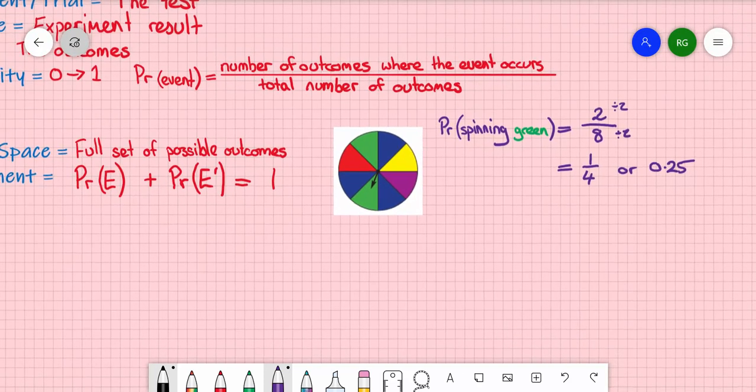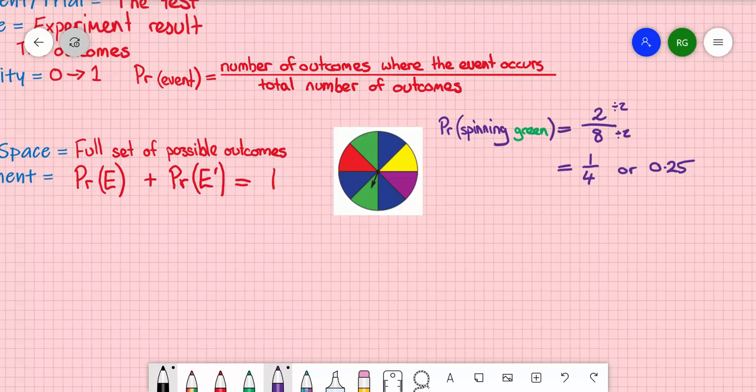The complement to spinning a green is then going to be all of the other results. So there are six out of eight other possibilities, which is three quarters, or 0.75. Remembering that when you add those two together, you will always get an answer of one.